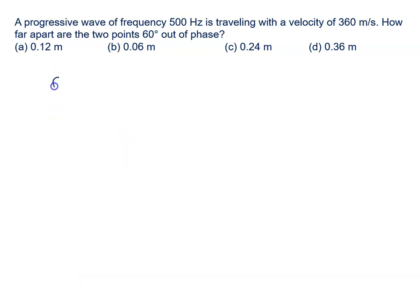A progressive wave of frequency 500 hertz is travelling with a velocity of 360 meter per second. How far apart are two points, delta x nikalna hai, and delta phi aapko diya rakha hai 60 degree out of phase.